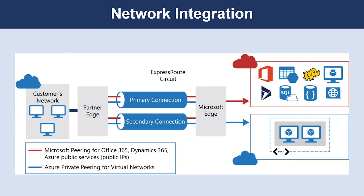It's common to have existing network infrastructure that needs to be integrated to provide communication from on-premises networks or to provide improved communication between services in Azure. There are a few key ways to handle this integration and improve the security of your network. Virtual private network connections are a common way of establishing secure communication channels between networks, and this is no different when working with virtual networking on Azure. A connection between an Azure virtual network and an on-premises VPN device is a great way to provide secure communication between your network and your virtual machines on Azure.